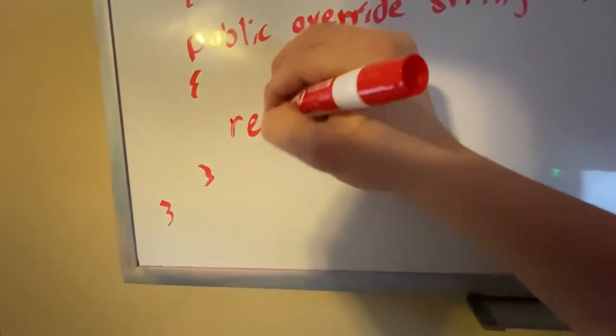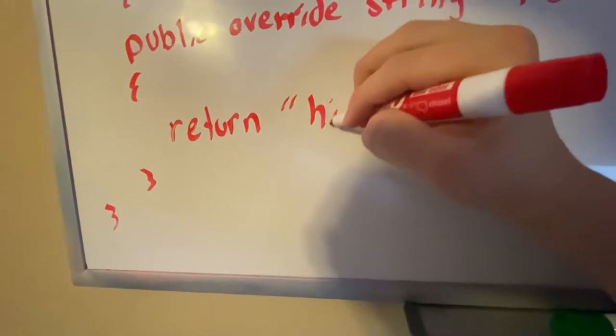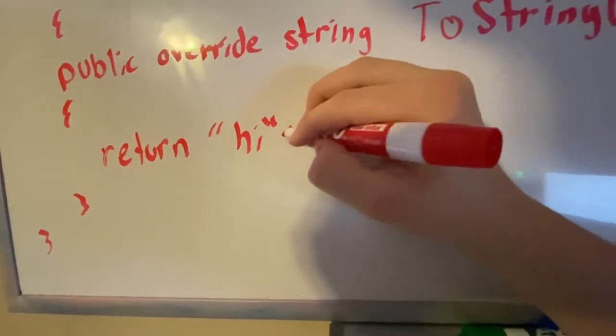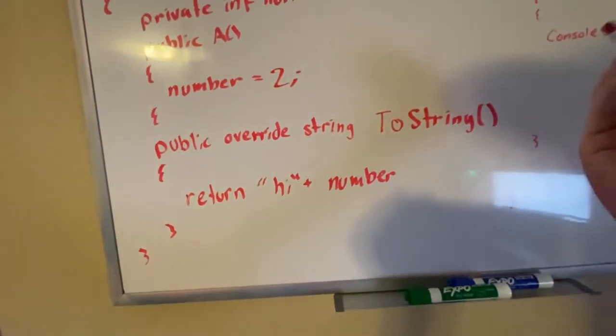So let's just say we want to print our entire thing. Basically you can do return. We can add like a "hi" plus number. But what will this print out since we're not changing anything? It'll literally just print out "hi 2", no space, right?